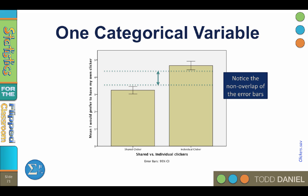The non-overlap of the error bars is a good hint that these two groups are likely statistically significantly different. We should do a t-test to find out, but just from the graph we can get a good idea.